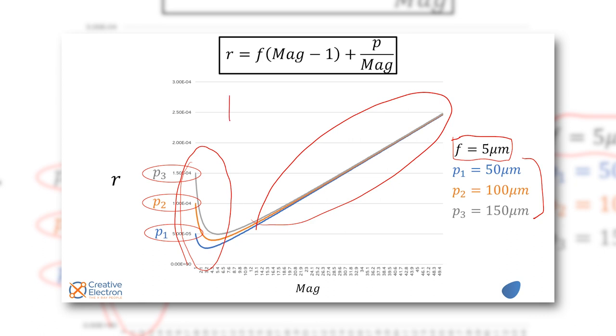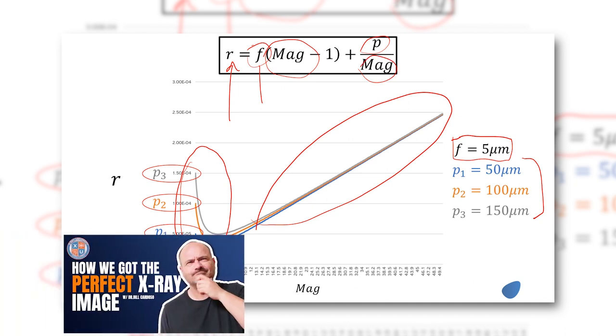So here's the final equation: r is equal to f, f is the focus spot size, 5 microns, 15 microns, 33 microns, half a micrometer like for the nano focus sources. Magnification is a function of the distance between the sample and the x-ray source and the sample and the detector. P is the pixel size on your detector and magnification shows up again. We discussed this in a previous video where we talk about the quality of an x-ray image is a short blanket. You can improve in one area and then something else is going to get worse.